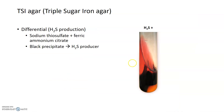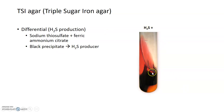TSI can also provide information about other biochemical properties, specifically differentiating between bacteria that can produce hydrogen sulfide (H2S) and ones that cannot. Several compounds within TSI agar — specifically sodium thiosulfate and ferric citrate — when combined with hydrogen sulfide, will form a black precipitate. So TSI can differentiate between H2S-positive bacteria, which show the black precipitate, and H2S-negative bacteria, which do not.